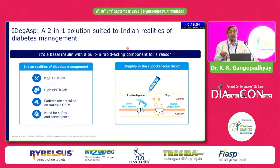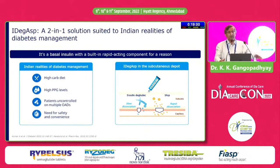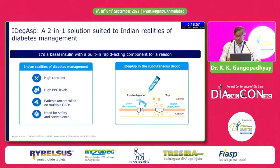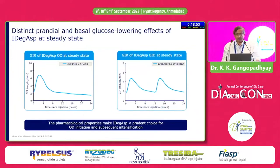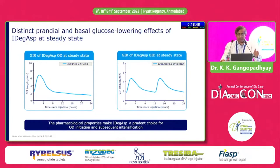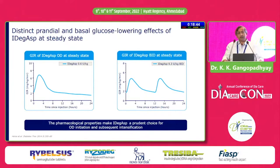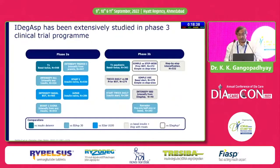What is the next step? IDegAsp is best suited. We know that it tackles both fasting and postprandial glucose. PP is very important for us given our lifestyle and the type of food that we eat. Initially, IDegAsp was started twice a day, but I always had the viewpoint that it should be initiated once a day for most patients, and then we can escalate it to twice a day.